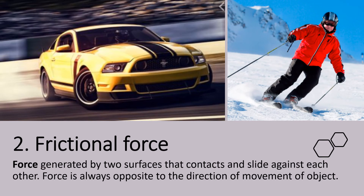The second type of force is frictional force — a force generated by two surfaces that contact and slide against each other. The force is always opposite to the direction of movement of an object. When a car is moving fast and the brakes are applied, it stops because there is friction between the tire and the road. In the second picture, a man skiing also applies frictional force on the snow, allowing him to change direction and move forward.